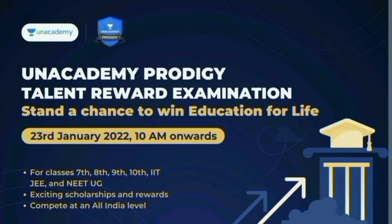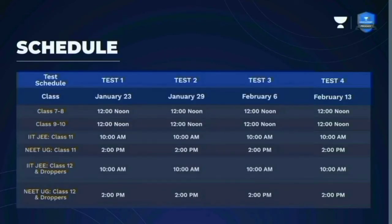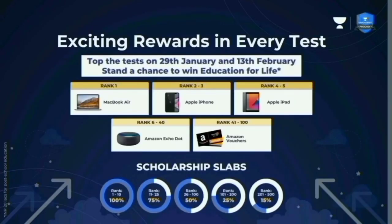Unacademy is going to launch the biggest test of the year for classes 7 to 10, JEE, and NEET UG students. Unacademy Prodigy is a free mock test where you will get a chance to win many rewards. The test dates are 23rd and 29th Jan, then 6th and 13th Feb. Each participant gets a chance to win Education for Life. Top scorers can win up to 100% scholarship covering graduation and post-graduation worth up to 20 lakhs. Education for Life is valid only for the tests on 29th Jan and 13th Feb.